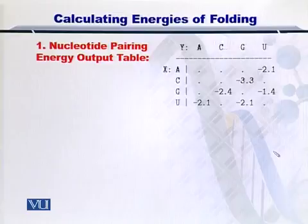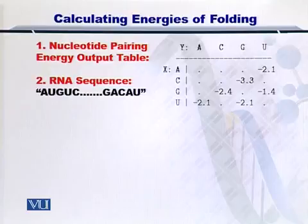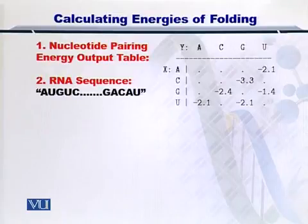We will see how to calculate the energy of a sample molecule. The sequence of the sample molecule is A, U, G, U, C and onwards until G, A, C, A, U. As you can see, the A, U, G, U, C portion is the 5' end and the G, A, C, A, U is the 3' end. Let's see what happens when this molecule folds.